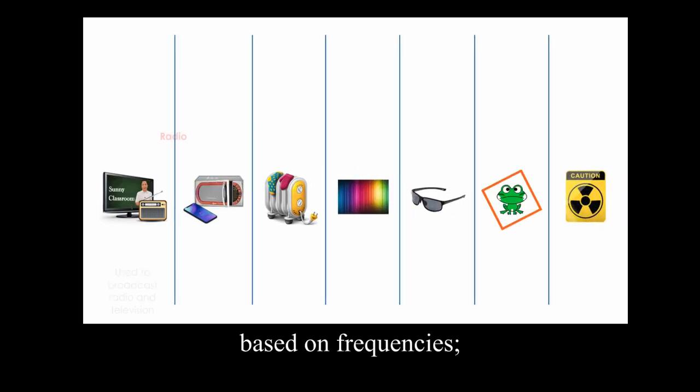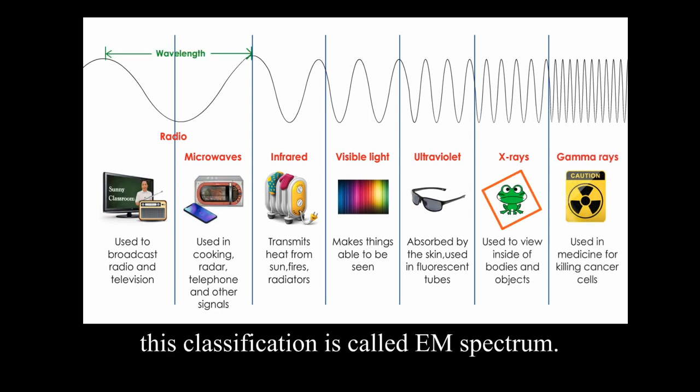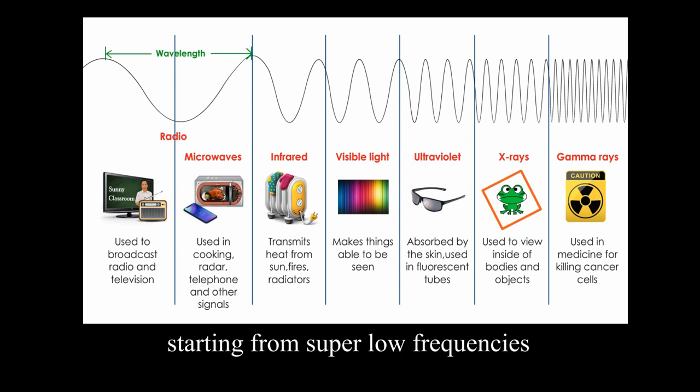EM waves can be classified and arranged based on frequencies. This classification is called EM spectrum. EM spectrum is divided into different bands with different names, starting from super-low frequencies to super-high frequencies.